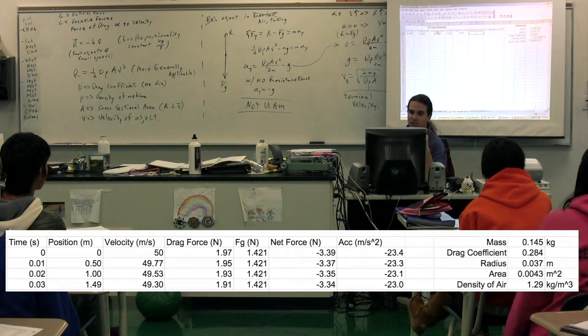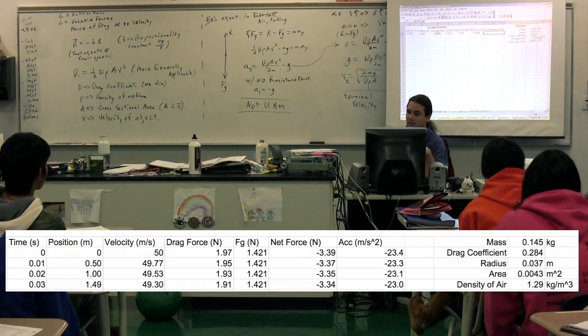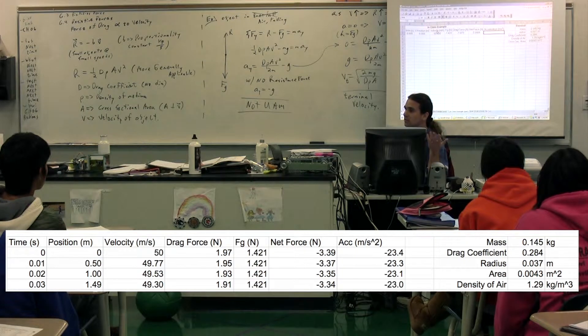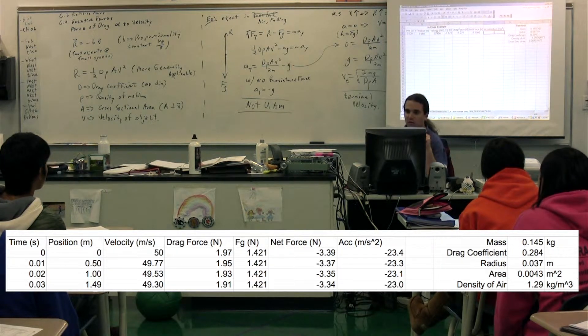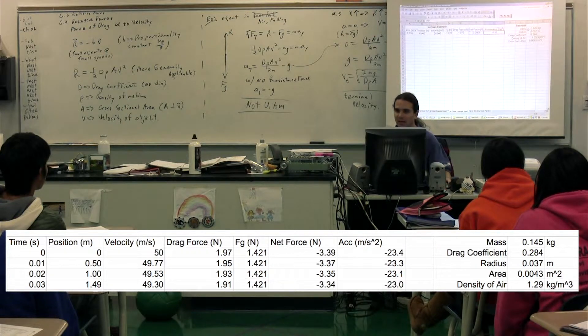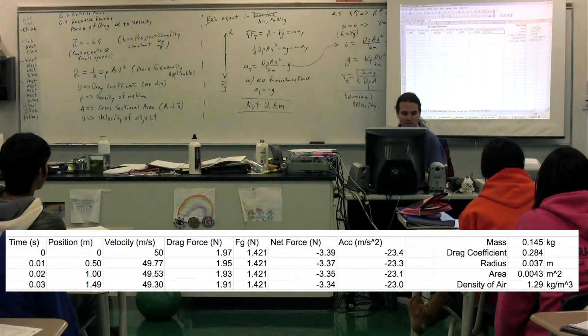The net force is just the addition of these two. The force of gravity plus the drag force. The acceleration is just the net force divided by the mass. Net force equals mass times acceleration. So the acceleration is going to be equal to the net force divided by the mass of the object. And again, the mass of the object needs to be an absolute reference.